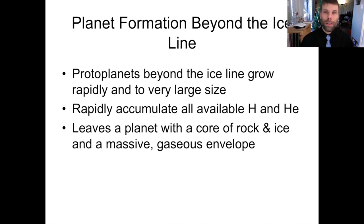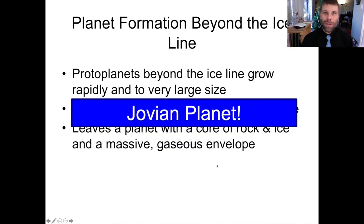What kind of planet am I describing? Rocky and icy core with a big gaseous envelope. Well, of course, as I hope you figured out, that's a Jovian planet. So this is how we build Jovian planets. We grow Jovian planets beyond the ice line or beyond the frost line, and we build terrestrial planets within the ice line, so closer to the Sun than the ice line is.